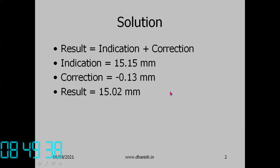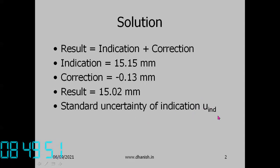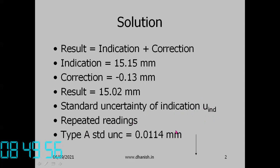Now we have to find the uncertainty of the indication and the uncertainty of the correction. For the uncertainty of the indication, there are 5 readings. The standard uncertainty is the Type A uncertainty: S divided by root N — that is, the standard deviation divided by root N. Please cross-check this calculation at home.